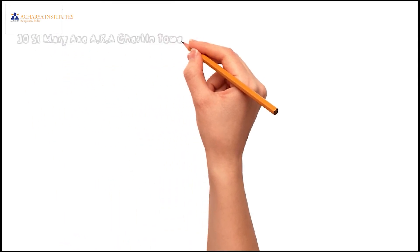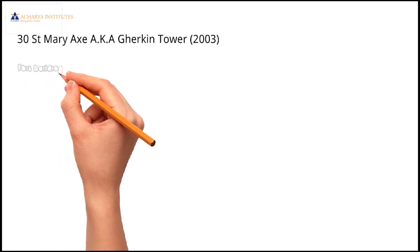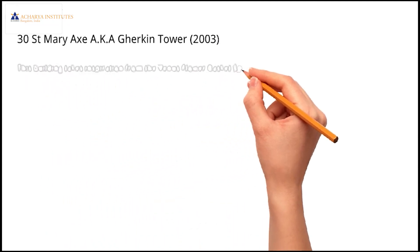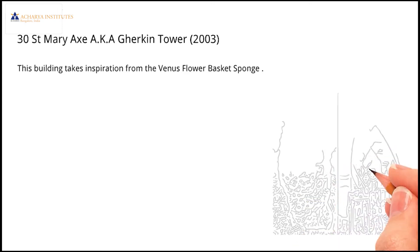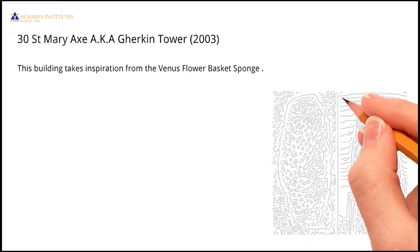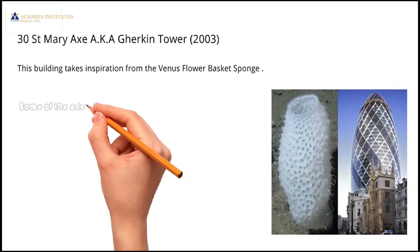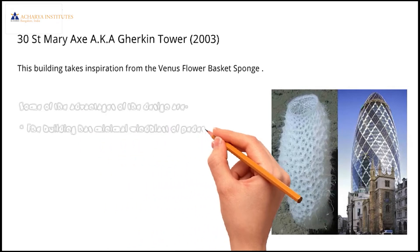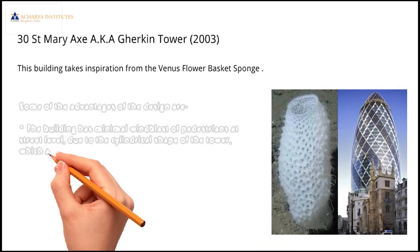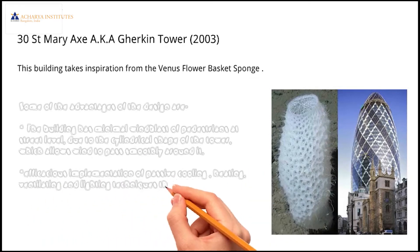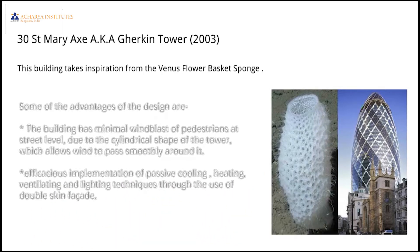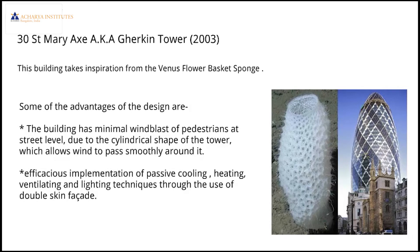Our next example is Kirkintar, which has derived its inspiration from the Venus flower basket sponge. Some of the advantages of the design are: the building has minimal wind blasts at pedestrian street level due to the cylindrical shape of the tower, which allows the wind to pass smoothly around it. There is also an efficacious implementation of passive cooling, heating, ventilating, and lighting techniques through the use of a double skin facade.